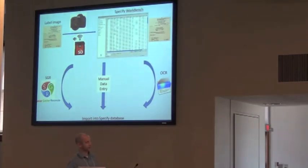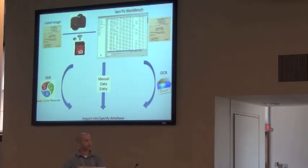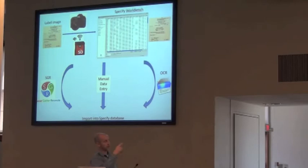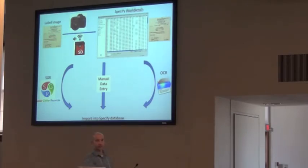Specify has been working on a workflow for getting label data into the WorkBench rapidly. You can now buy Wi-Fi SD cards for cameras that wirelessly transfer images directly to your computer. The idea is to set up an imaging station where, as you place new items under the camera and hit the shutter, it transfers the label image to your machine and creates a row in the WorkBench for that label. You can then sit and rapidly click through items, automatically creating rows, and use those images for data entry.